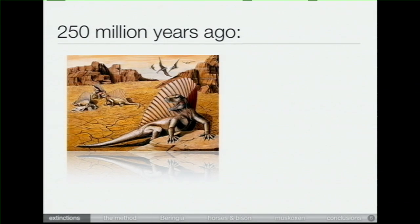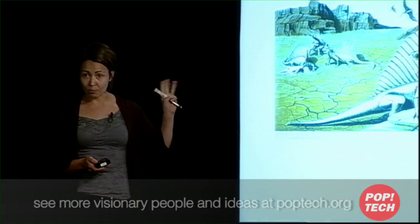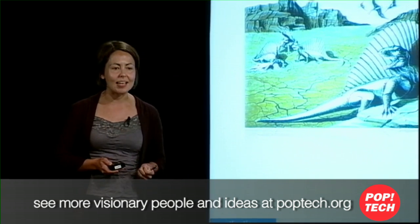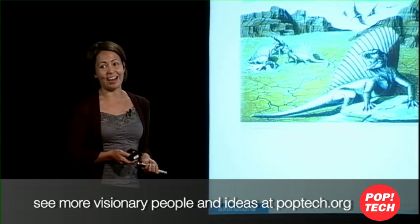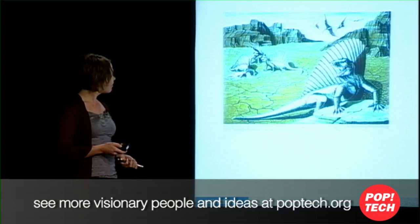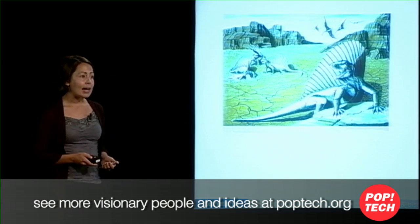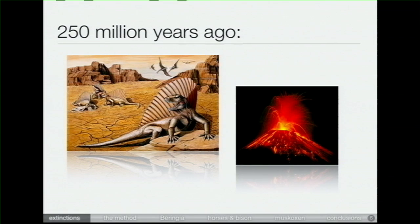The third extinction is my favorite because it's called the Great Dying — a pretty awesome name for an extinction event. This happened about 250 million years ago, the third one. We lost about 96% of species that lived on the planet at that time. 96%! That's a pretty big dying. This was caused by massive environmental changes: volcanic eruptions along the seafloor changed the temperature of the water, causing an enormous impact on the mostly marine community living on the planet at that time.